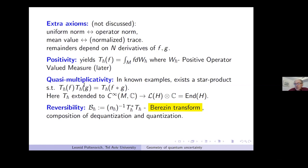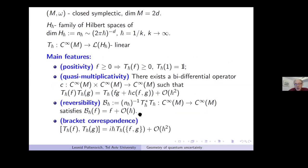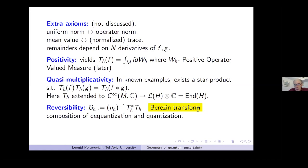The composition of quantization and dequantization, which I declared to be basically identity plus a small error, is called the Berezin transform. This is a very important operator which is actually its own whole world, and maybe at the very end I will say something about it. Perhaps this is a good point to take some questions.